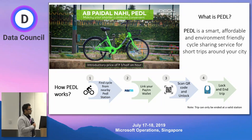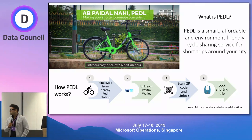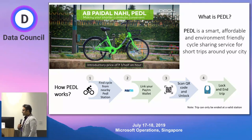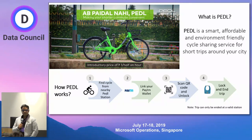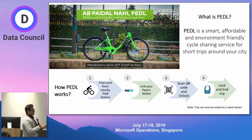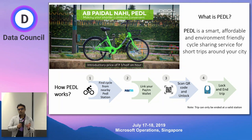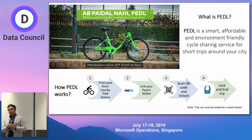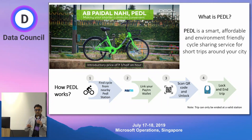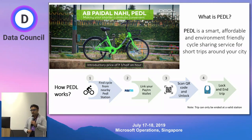So instead of that, the basic difference in our model is that we have virtual hubs. Every 100 to 200 meters we have bike stations where you will find 10 to 20 bikes aggregated. You have to pick up bikes from a station and you can drop at any other station, but you cannot drop in between anywhere. There's a small penalty for that.